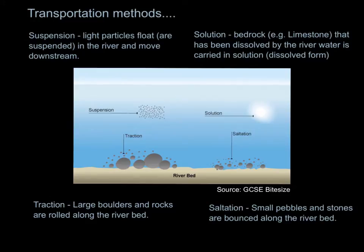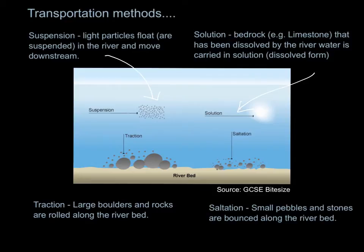This diagram summarises the four main transportation methods. Suspension is where light particles are able to float in the river and move downstream — they're light enough to be carried in suspension or suspended flow. Solution is very similar to the erosion process: the material is dissolved and then carried in that dissolved form along the river channel. Note that solution is both an erosion and a transportation method.